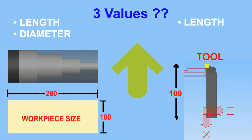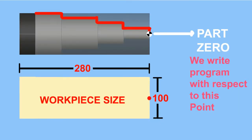We have to understand that there are three things the machine doesn't know: workpiece length, workpiece diameter, and tool length. These are all directly related to Part Zero. The solution to all of these problems is geometric offset in CNC turning.